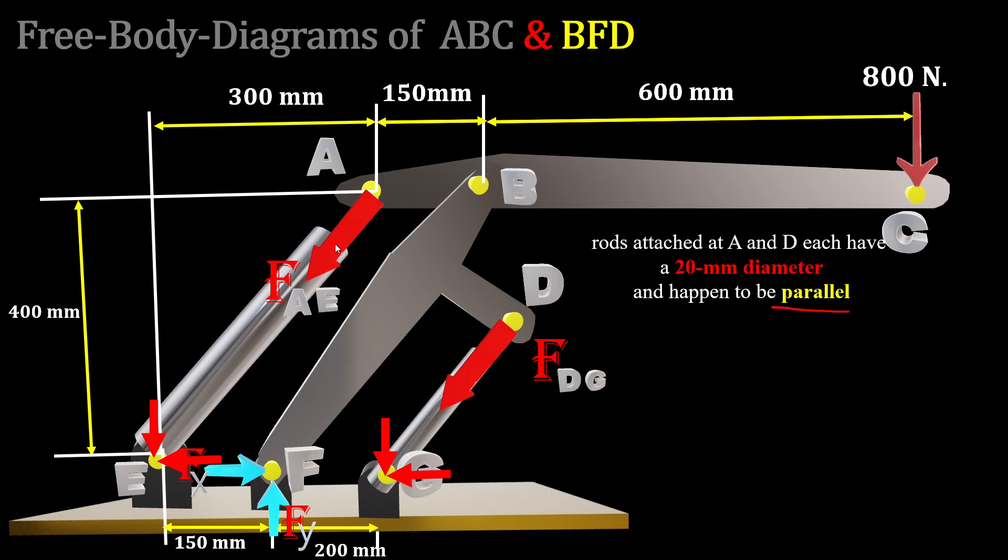Summation of moment about F goes to zero. It says 4/5 FAE, meaning the vertical component of FAE, times the distance between A and F, or E and F, which is 150 from each side. From each part you move just half the section, that's 150 millimeters.